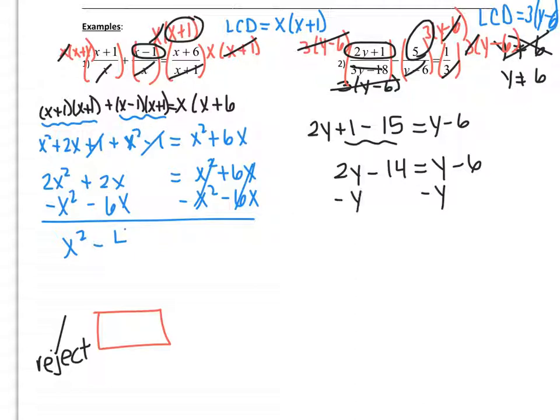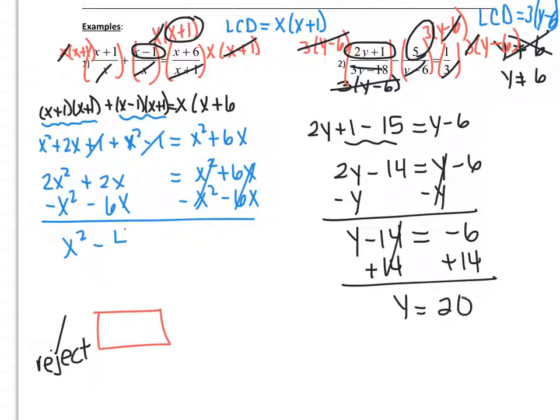So I'm going to subtract y. So I have y minus 14 equals negative 6. Add 14 to both sides. And I have y is equal to 20. And that seems to work fine. There's no problem because I don't have to reject it because the undefined value was 6. All right, let's move on to the back page.